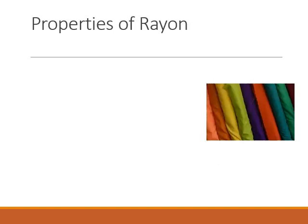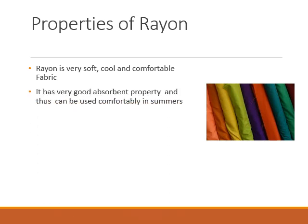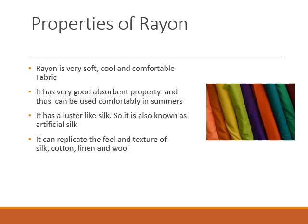Now let's see the properties of rayon. Rayon is a very soft, cool, and comfortable fabric. It has very good absorbent properties, so we can use it comfortably in summers as it absorbs sweat. Rayon has a luster which makes it look like silk, so we also call it artificial silk. Rayon can replicate the feel and texture of various natural fibers like silk, cotton, linen, and wool, and it can be easily dyed in various colors.